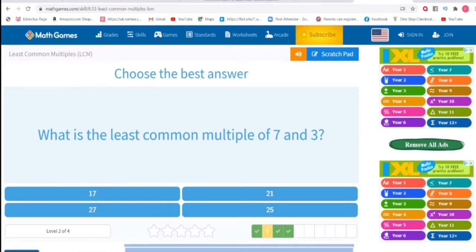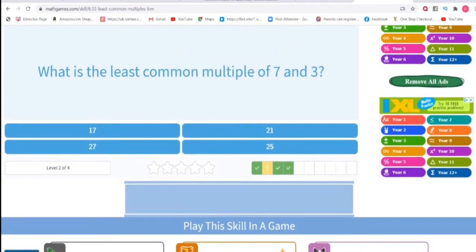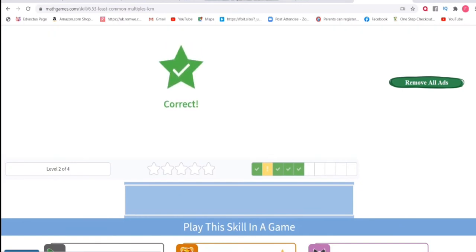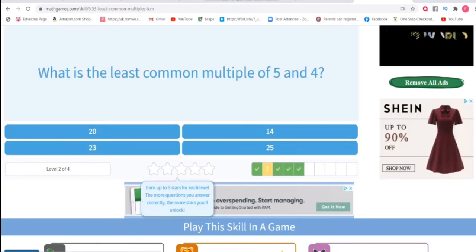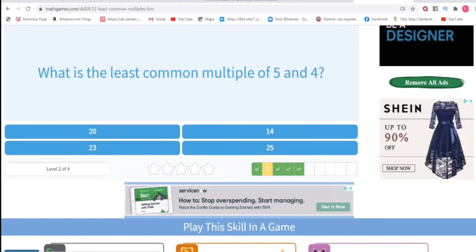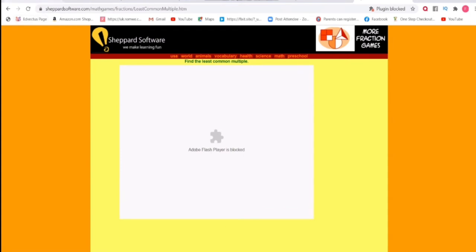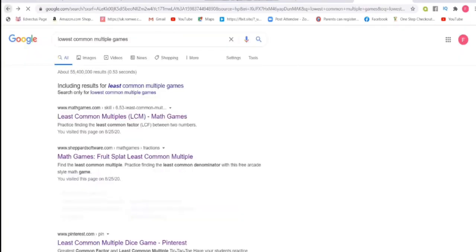So let's continue. What is the least common multiple of 7 and 3? Here they have options now so you can select the correct option, and that's 21. Correct. So this is one game. Let's look at another game, so I'm just coming here to the next option.